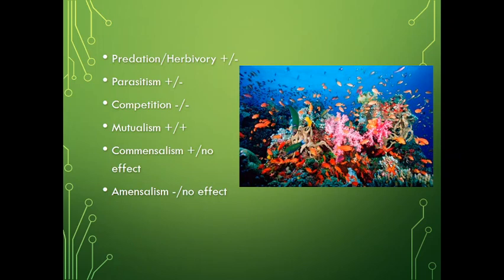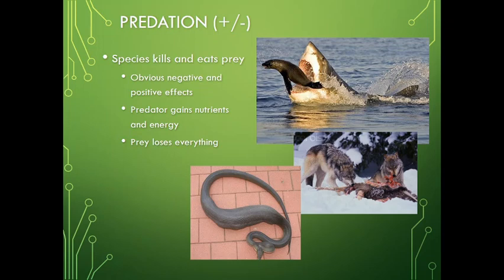There are a variety of different interactions. Predation, herbivory, and parasitism are all where it's positive for one and negative for the other. Competition is negative for both species. Mutualism is positive for both. Two less commonly known interactions are commensalism and amensalism — that's where you have a plus and no effect, or a negative and no effect. Predation is clearly positive for one player and negative for the one that gets eaten.